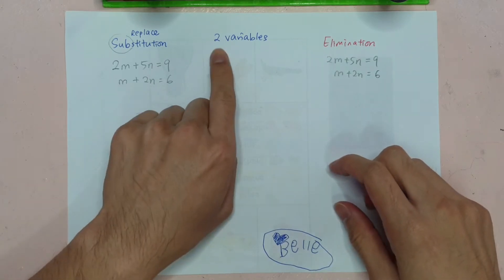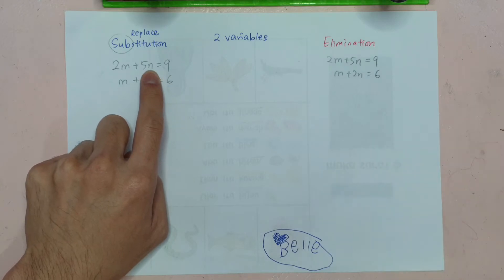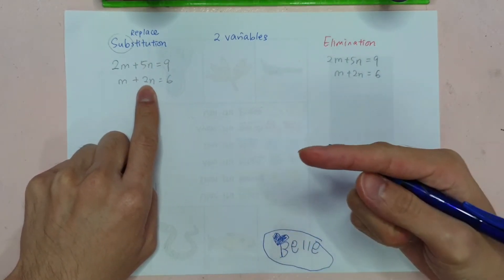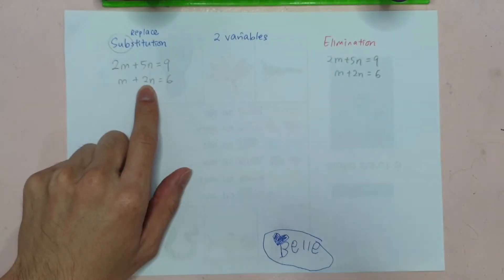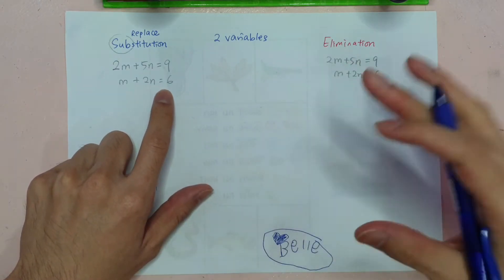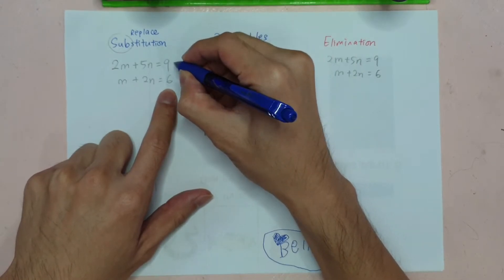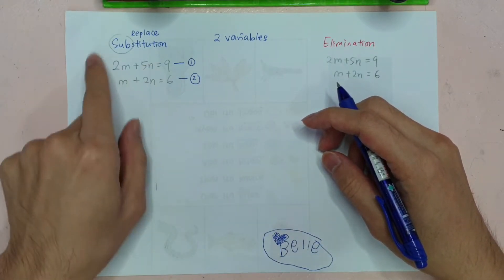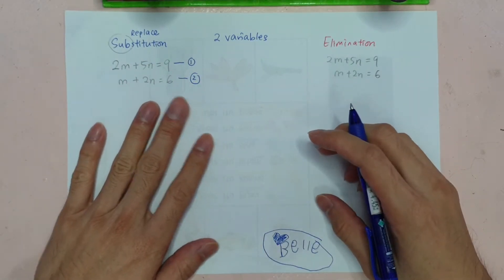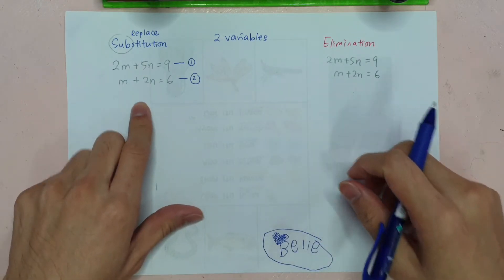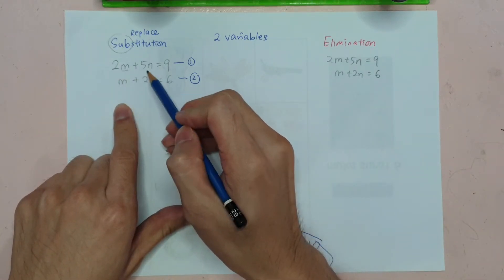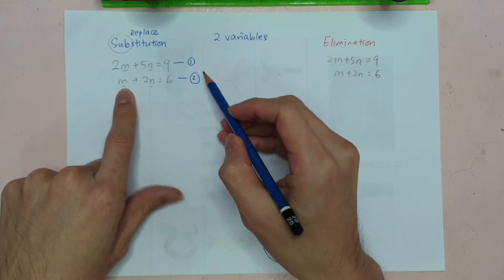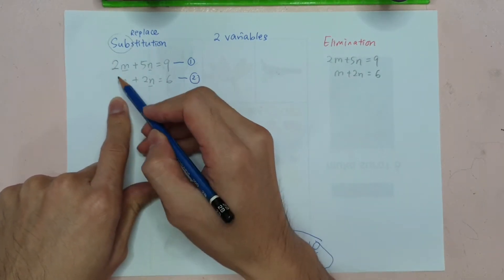2 variables means 2 unknowns, 2 different unknowns. With 2 variables, there will be 2 equations helping each other. When you start, you select the equation where the unknown has a coefficient of 1 (or negative 1). So I'm going to start with equation number 2.